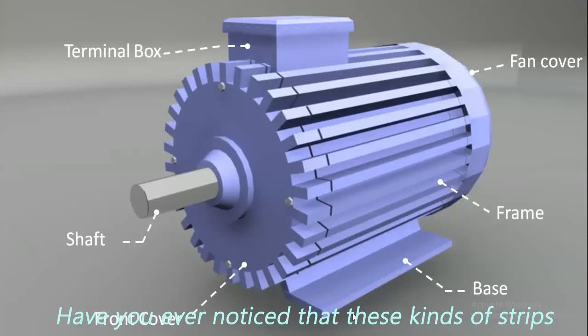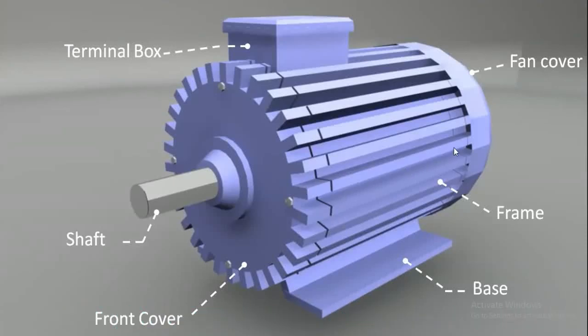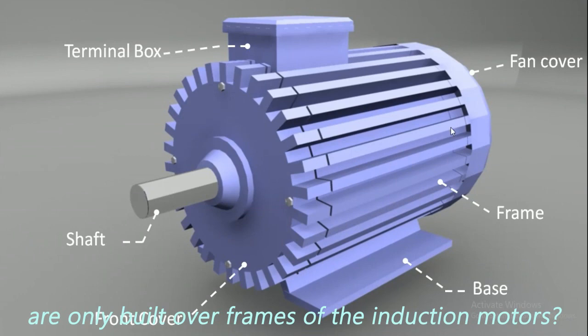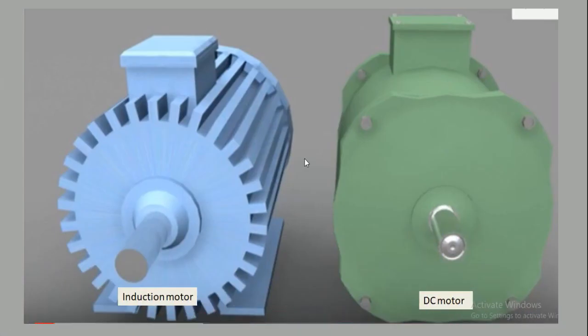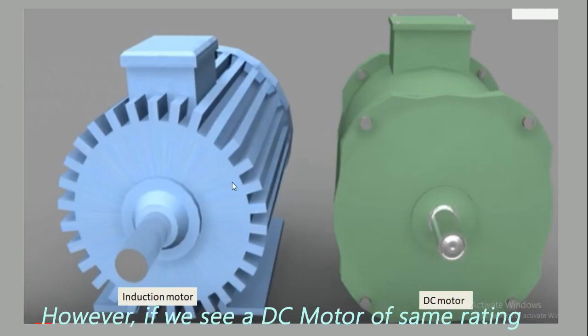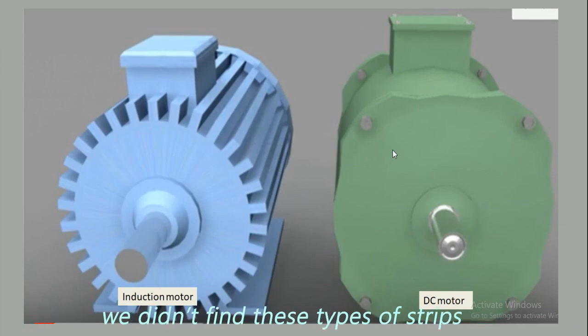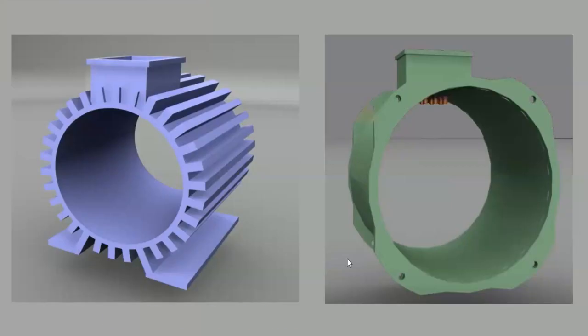Guys, have you ever noticed that these kind of strips are only built over frames of the induction motors? However, if we see a DC motor of same rating, we didn't find these types of strips. Let me tell you the reason.